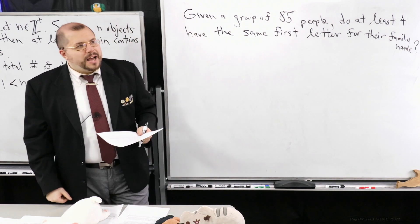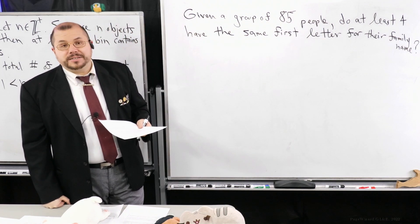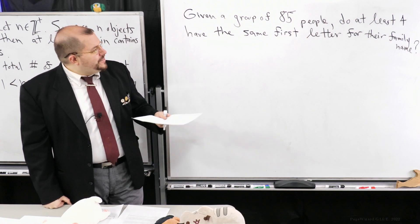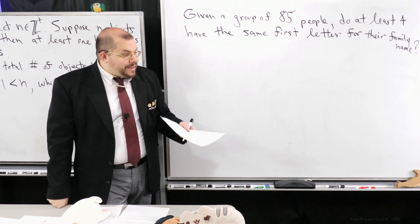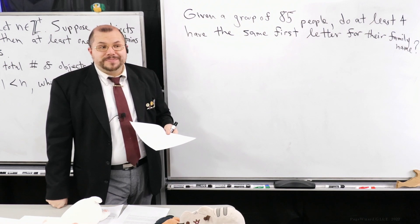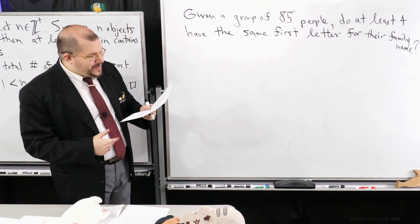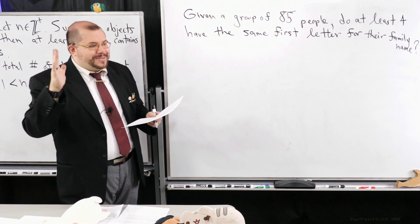You'd agree with me that, at least if we're speaking English, the first letter of a name would be an English alphabet letter. It would be one of the 26 letters. So if I give you any one of these people, when I look at their family name or last name, it will have a first letter, and it must be one of the 26 letters in the English alphabet.